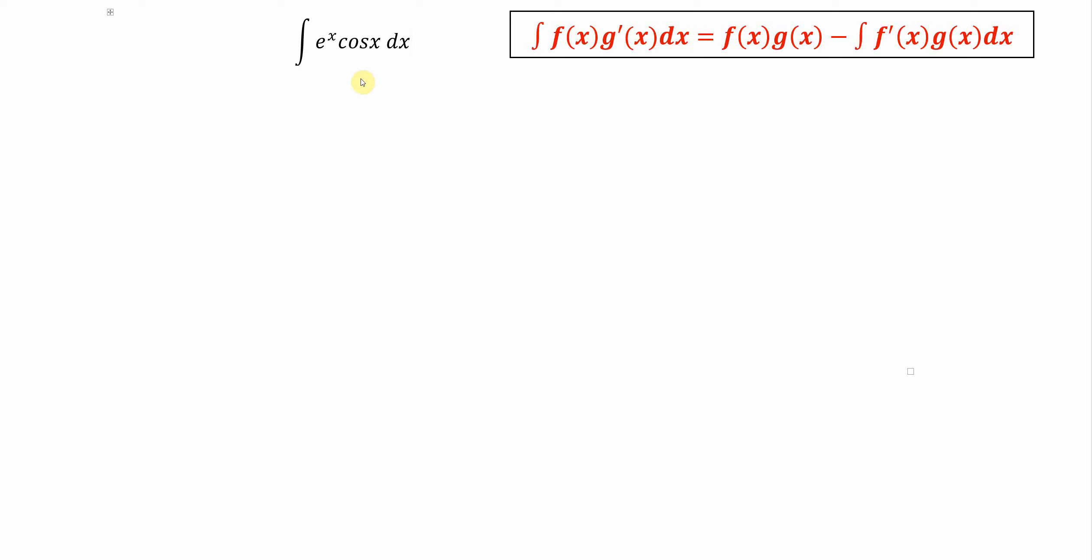There's some things we should notice about this anti-derivative. The cosine function, just like the sine function, is cyclical. The derivative of cosine is negative sine. The derivative of negative sine is negative cosine. The derivative of negative cosine is positive sine. And the derivative of positive sine is cosine again.